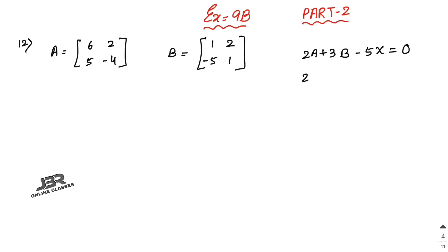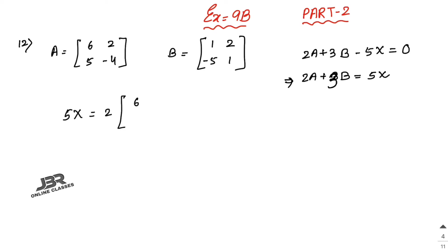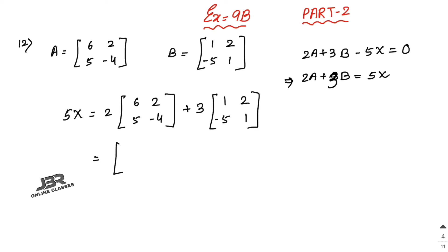We take 5X to the right side, so 2A + 3B = 5X. First find 2A + 3B. Write 5X = 2 multiplied with matrix A plus 3 multiplied with matrix B. Multiply 2 with each element of A: [12, 4; 10, -8].